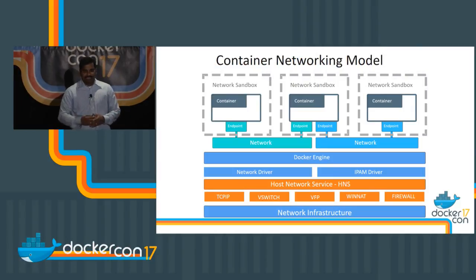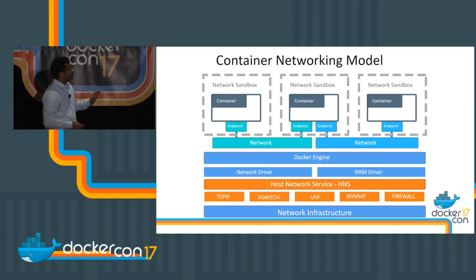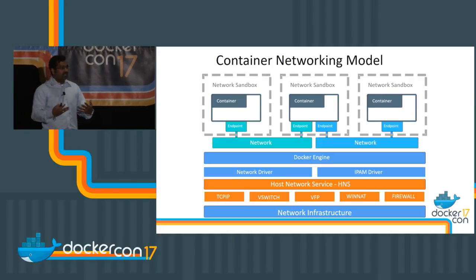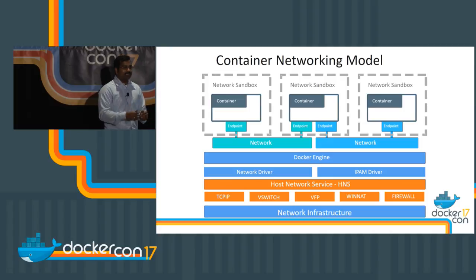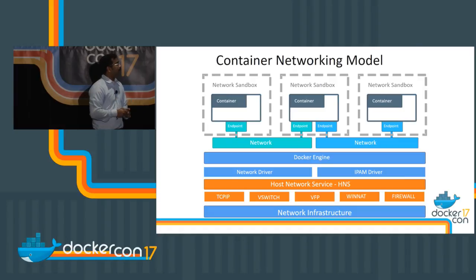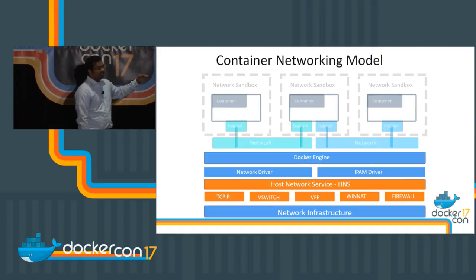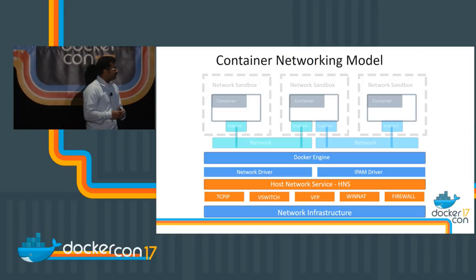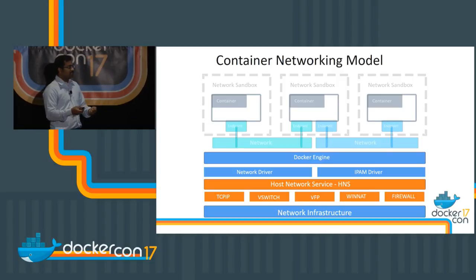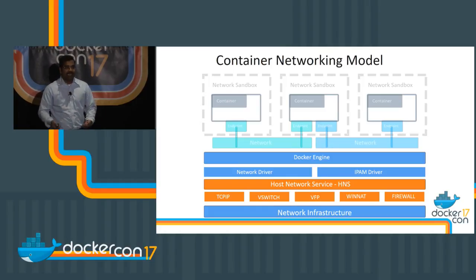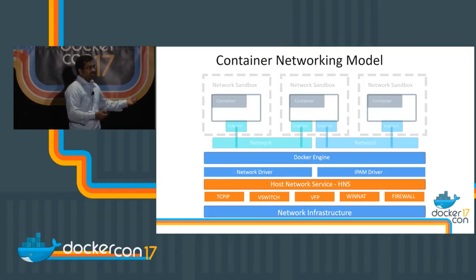The Docker networking architecture is built on the container networking model. For Windows too, all the constructs — sandbox, endpoint, and network — remain the same. No changes, and even the Docker CLI options remain the same. What we have done is written the Windows networking driver, which calls an abstraction layer called the Host Network Service. The host network service is responsible for setting up container networking, including creating vSwitches, creating NAT, creating endpoints, binding them to switch ports, and applying policies on those endpoints.